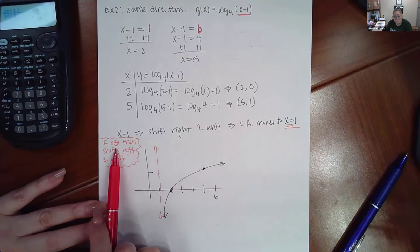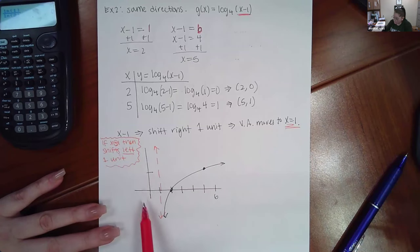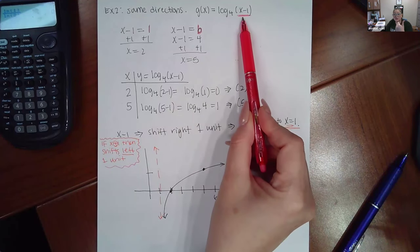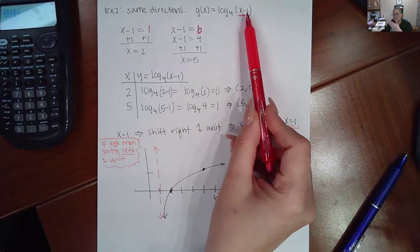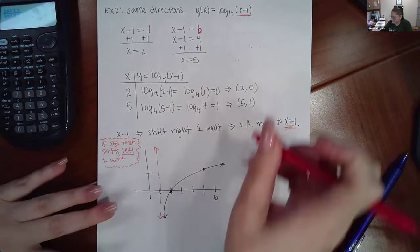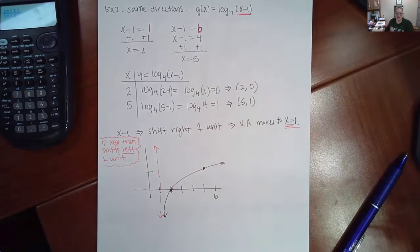I just wanted to point out a little quick note here that if the argument was x plus one, then the graph would be shifting left one unit, and then it'd be over here at x equals negative one. So depending on whether you're adding in there, that will go to the left. If you're subtracting inside here, it goes to the right. And that's just a quick review of the transformations from a previous unit. It's just we're extending those concepts now into the logarithmic and exponential functions.